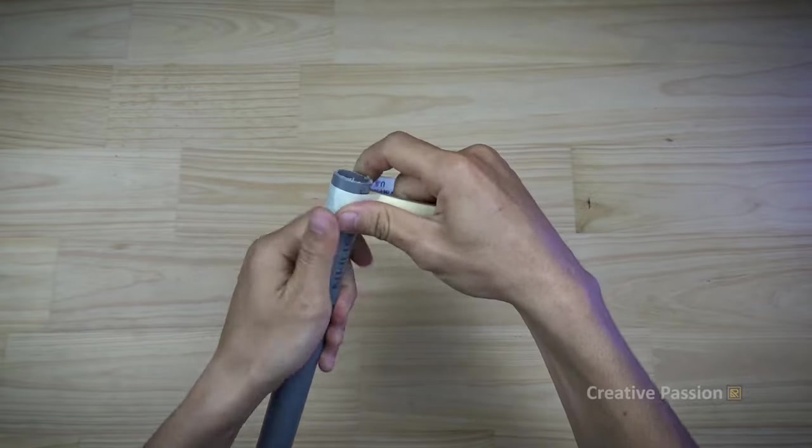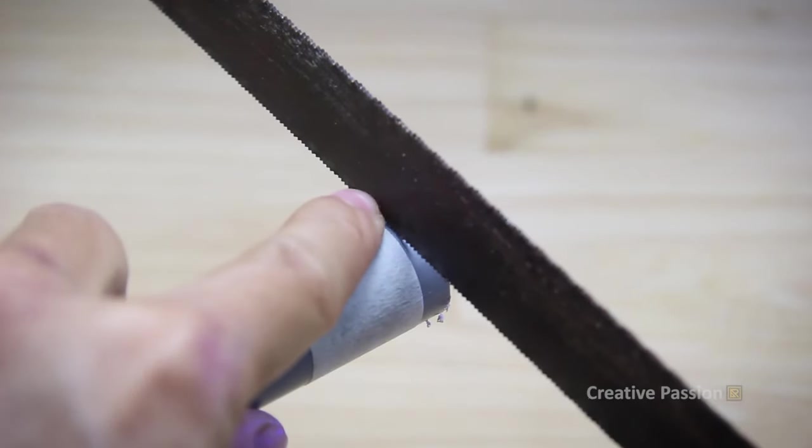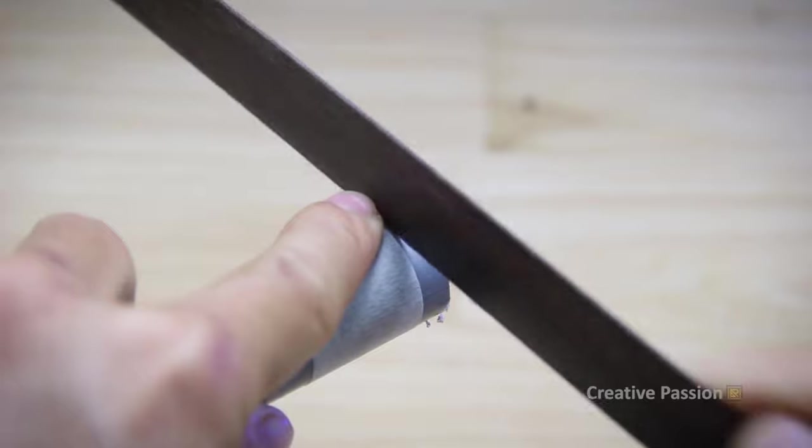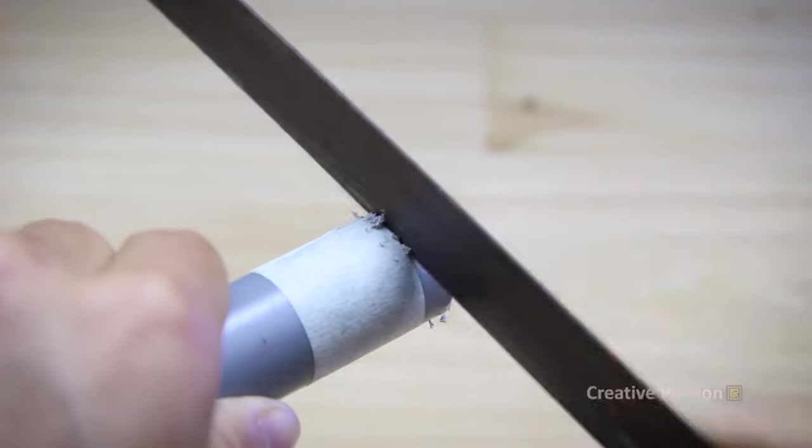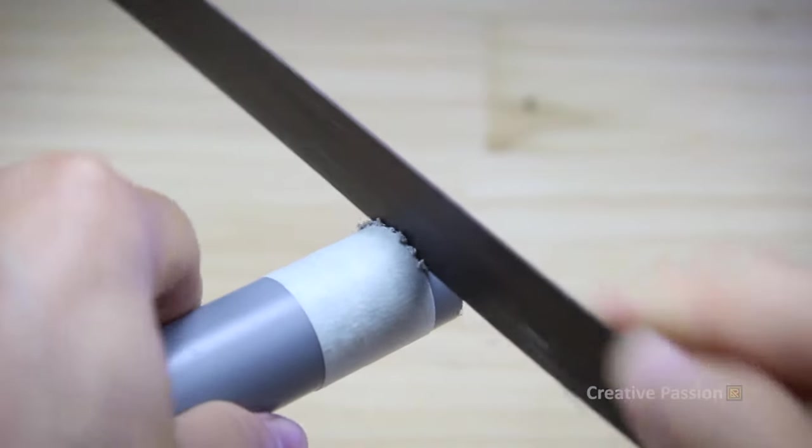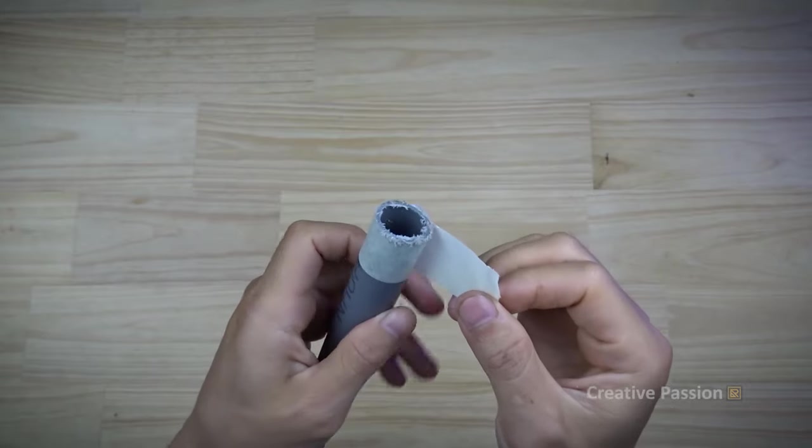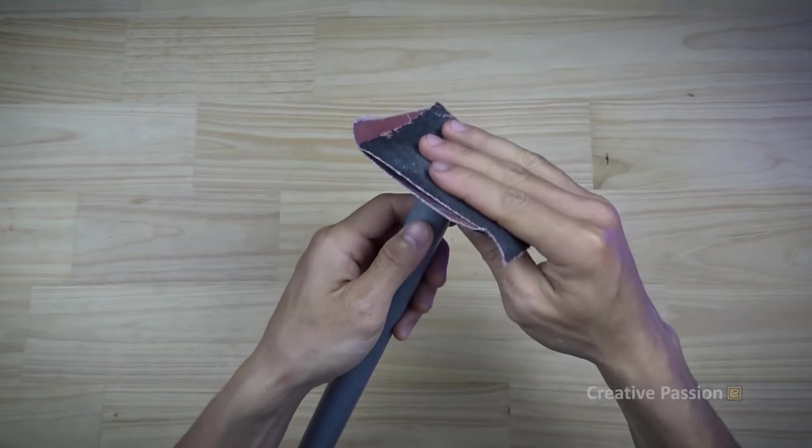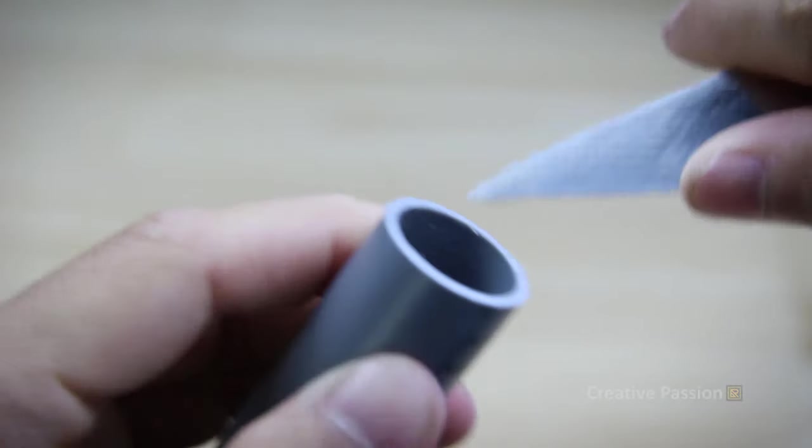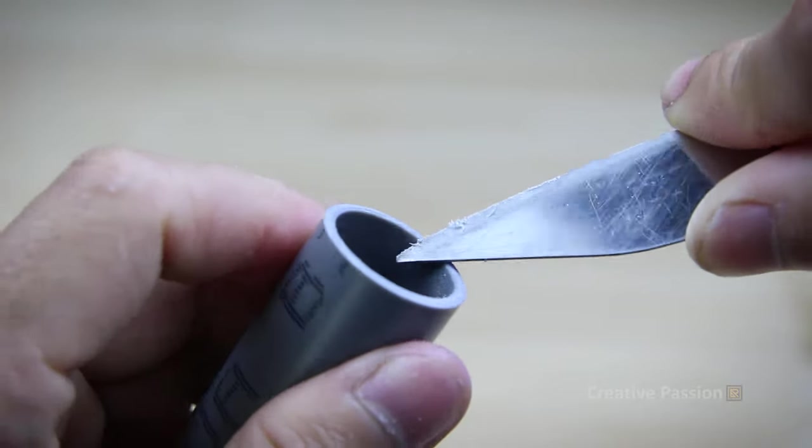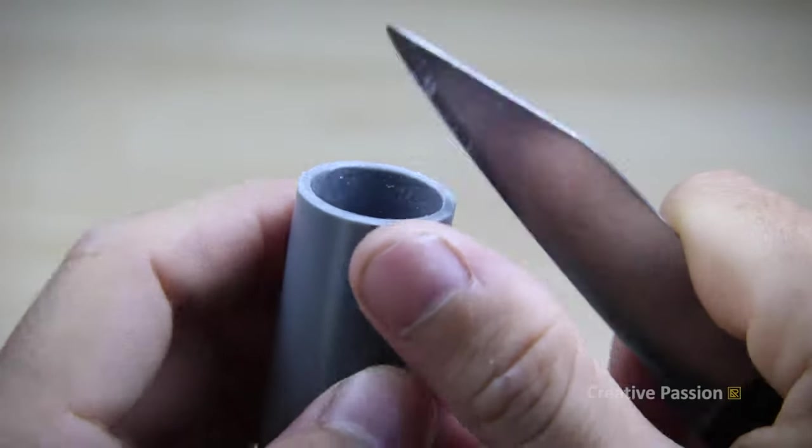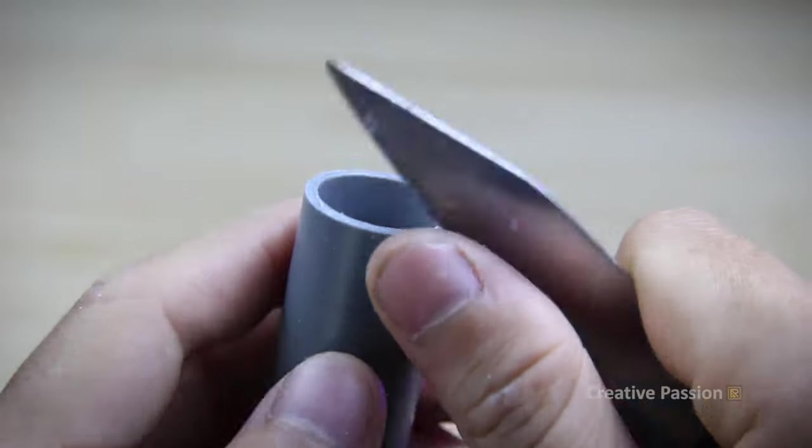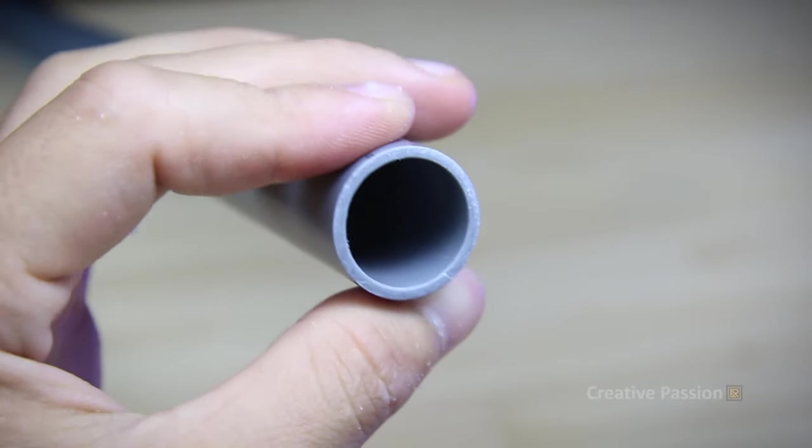First step, we will cut and clean both ends of the PVC pipe. Okay, and we will get it like this.